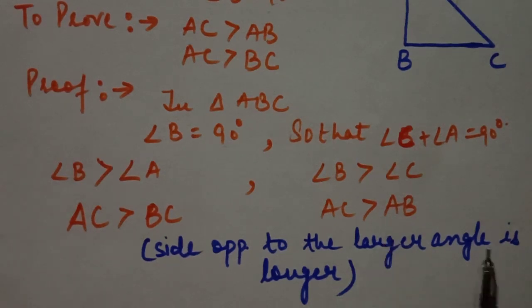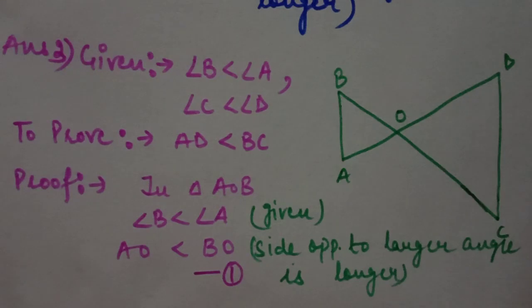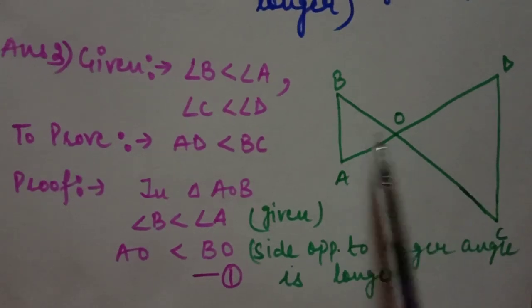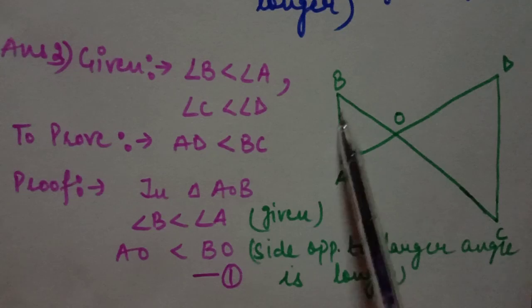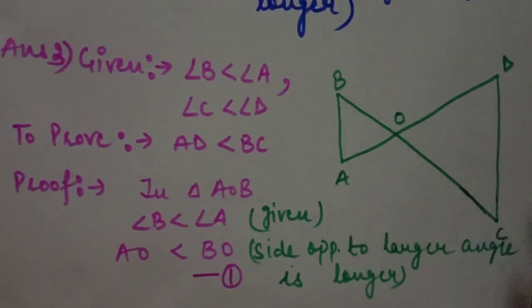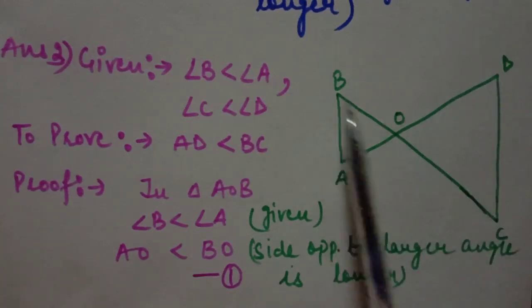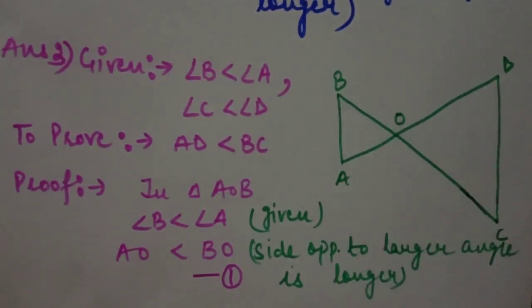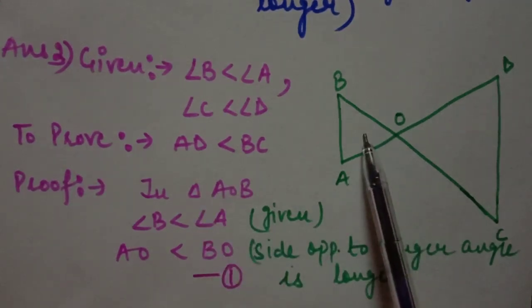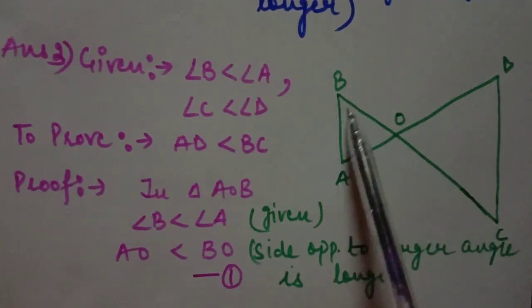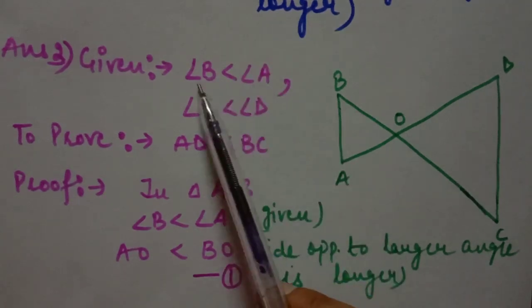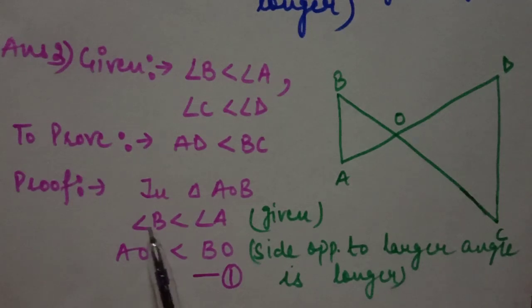Question 2 was already explained in Lecture 6. Now Question 3 from NCERT states: angle B is less than angle A and angle C is less than angle D. This diagram is given. We have to show that AD is less than BC. In triangle AOB, we have a relation between angle A and angle B: angle B is less than angle A.